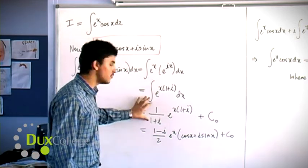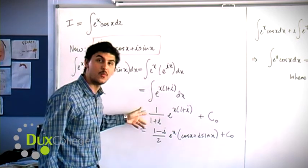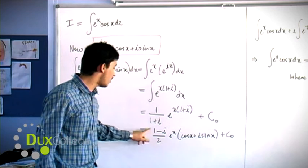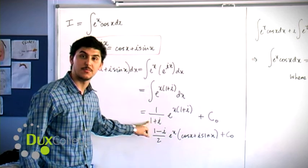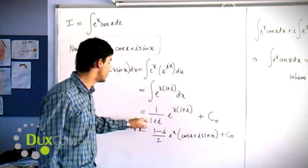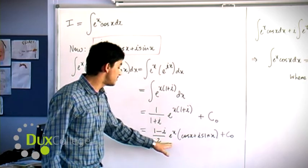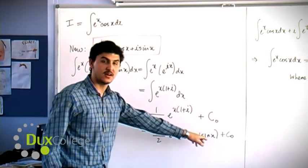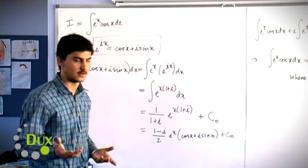Now we want to rationalize this denominator. We multiply top and bottom by 1 - i, giving us (1-i)/2. The denominator becomes the modulus of (1+i) squared; the modulus of 1+i is √2, squared gives 2. This yields (1/2)e^x(1-i)(cos x + i sin x) + C₀, where C₀ is a complex constant.